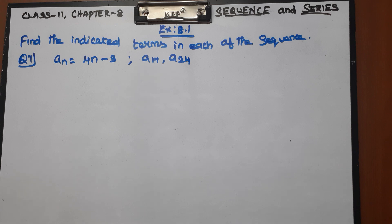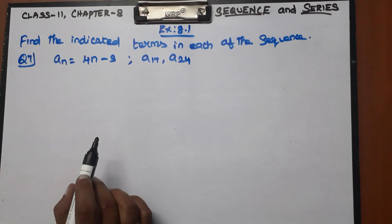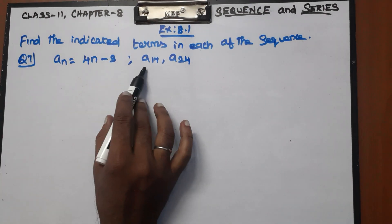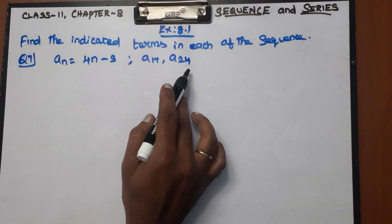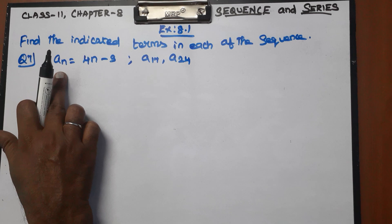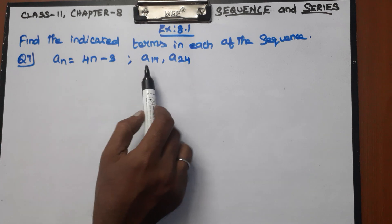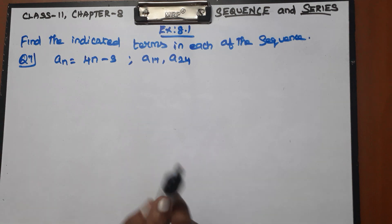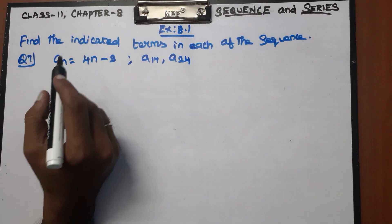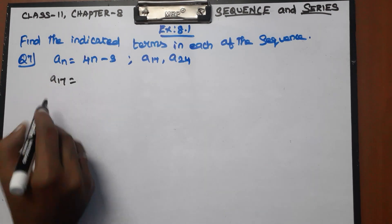So this is a case study. Let's look at Question Number 7. The formula is an equal to 4n minus 3. We need to find the value of a17 and a24, that is the 17th term and the 24th term. We can substitute n equal to 17 or 24 to find the answer. For a17, substitute n equal to 17: 4 into 17 minus 3.